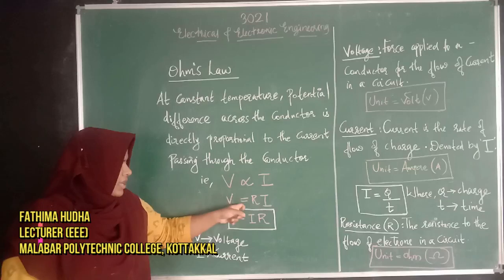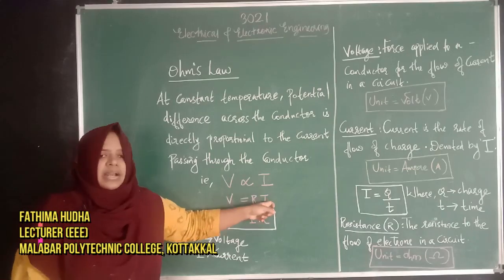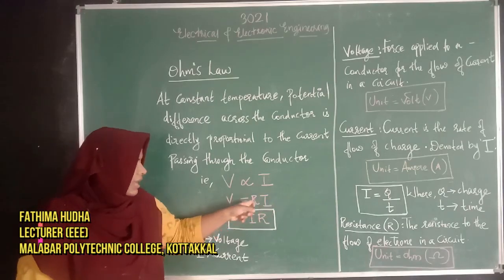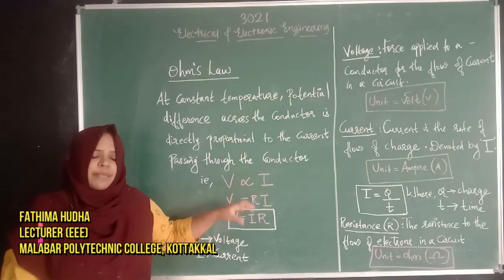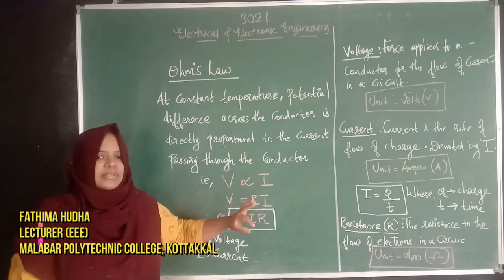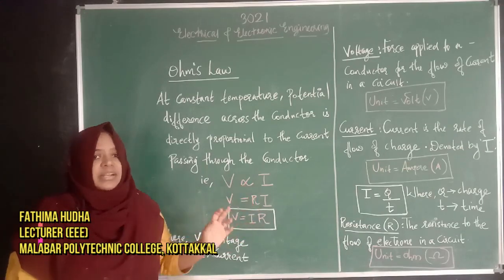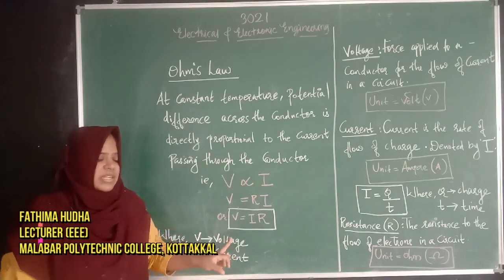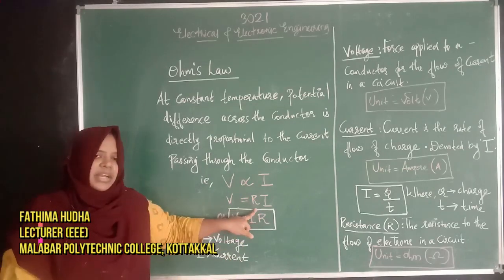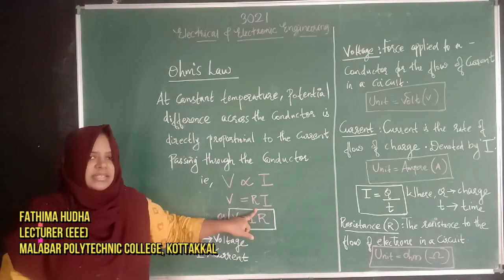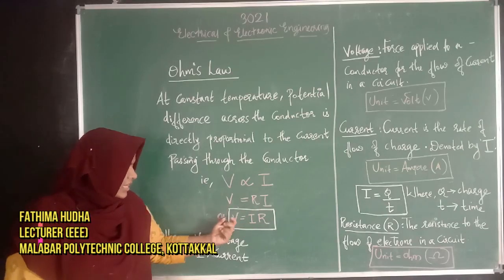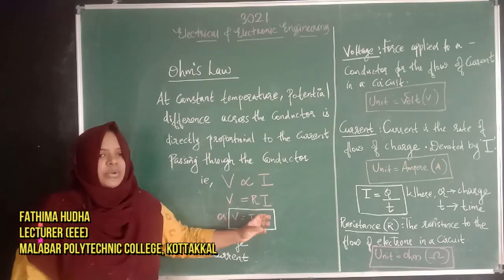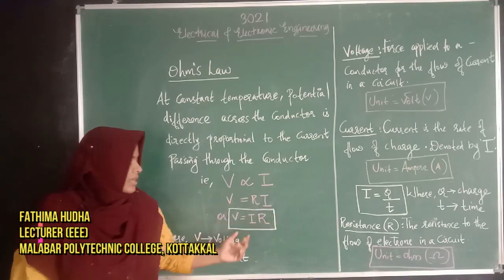Next, V is equal to RI. This R is the proportionality constant. This proportionality constant is the resistance. R denotes resistance. We rearrange the equation to V equal to IR.